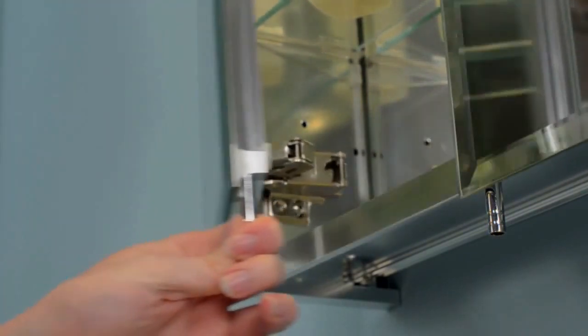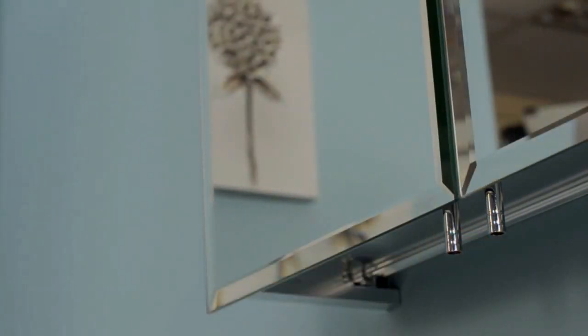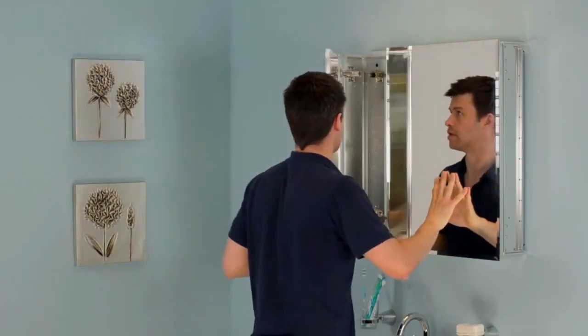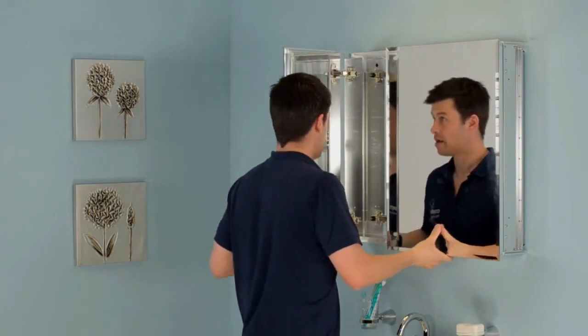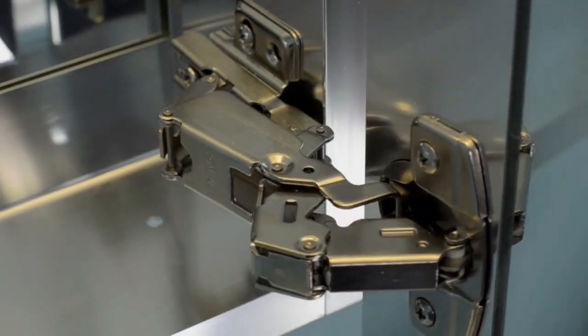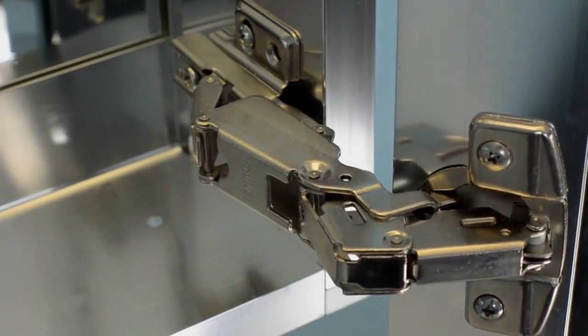Jacuzzi aluminum cabinets provide great value for the money with increased flexibility both inside and out. Externally, doors can be left or right hand opening by turning the cabinet around, and wider opening hinges provide greater accessibility into all of the cabinet space.